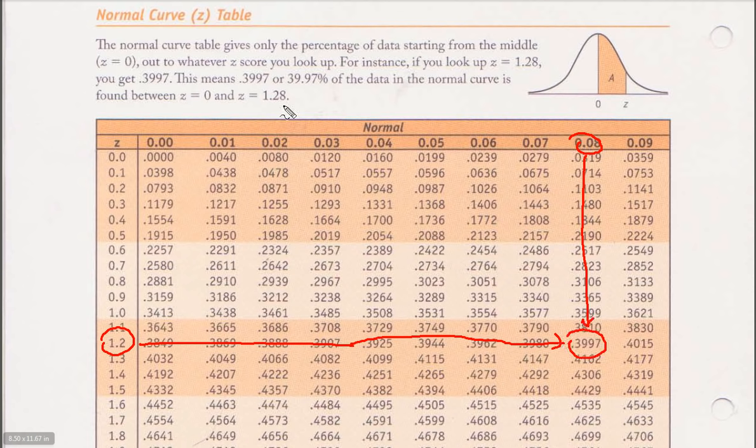Now, what is this percentage? Let's go back. This table tells us the percentage from the middle to a Z value that you look up, a Z score. So, since we looked up 1.28, that's what we replaced that Z over here in the picture with. And what we got is that 39.97% of the data is between Z equals 0 and Z equals 1.28.